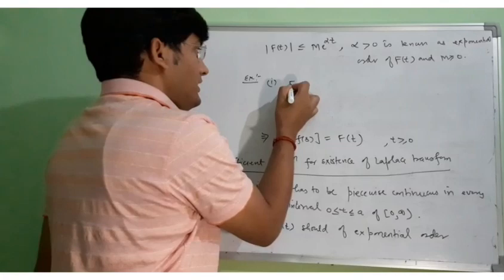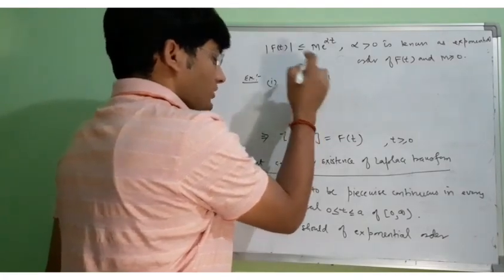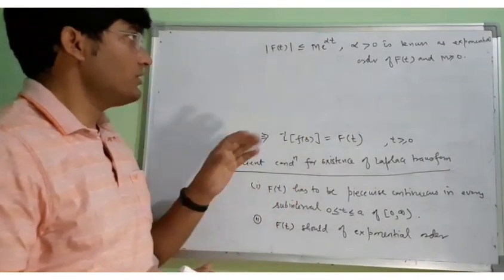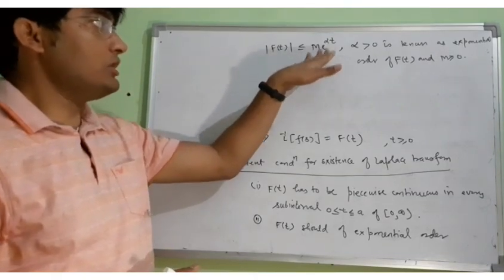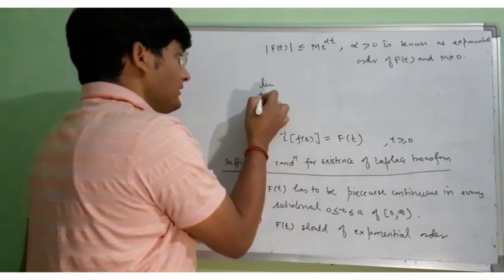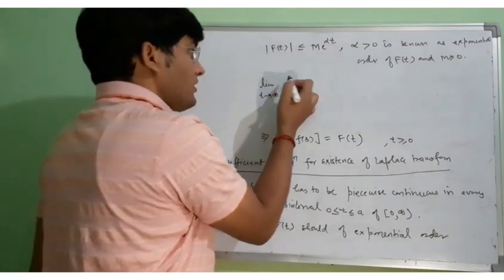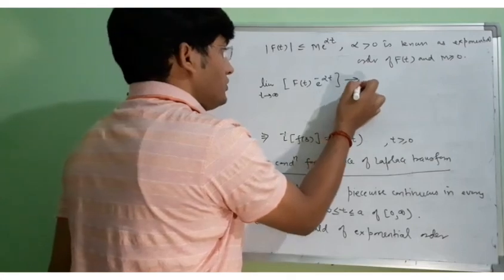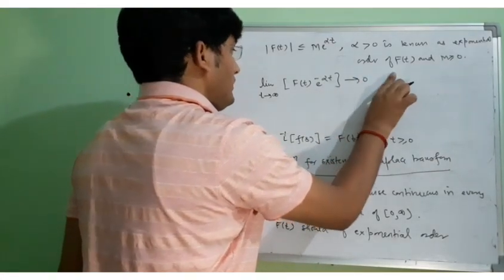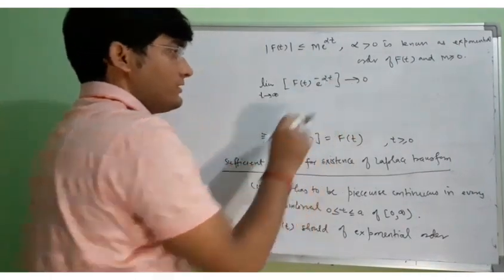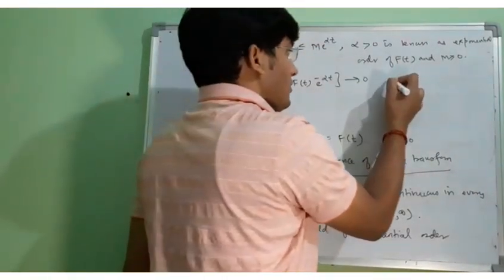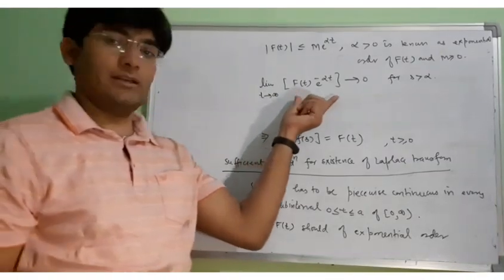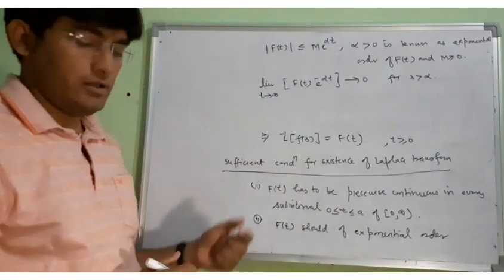In the first example, suppose F(t) is equal to t to the power n. The meaning of the exponential order condition is that the modulus of F(t) has to be less than or equal to m e to the power alpha t. We can also write it as: the limit as t tends to infinity of F(t) times e to the power minus alpha t should tend to 0, and that should hold for s greater than alpha. If this limit is finite, then we say that function F(t) has exponential order alpha.